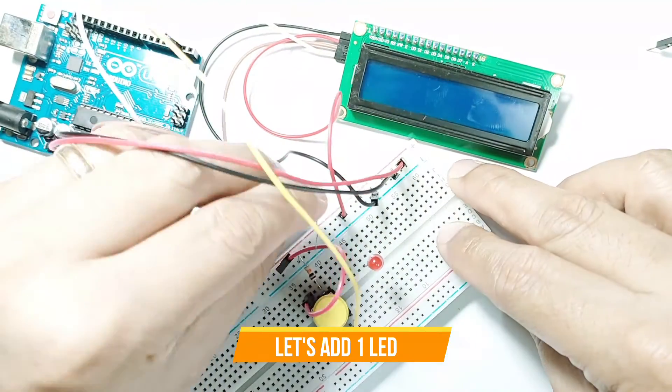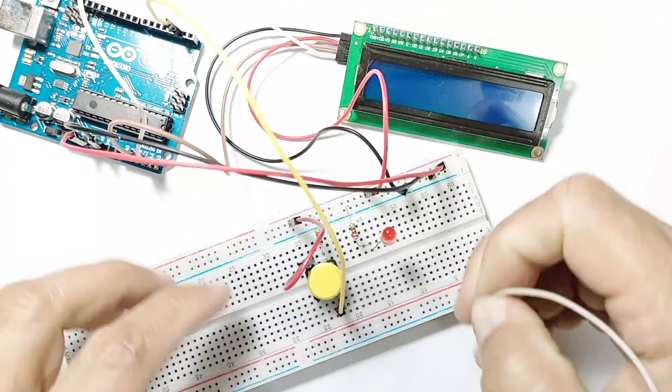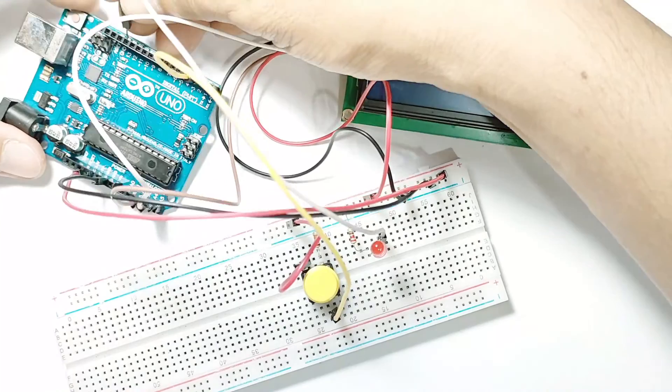In mode 1, the LED is off. In mode 2, the LED is on. In mode 3, the LED blinks. Let's update our code to include these functionalities.